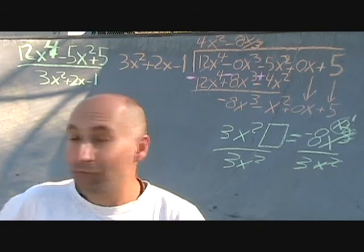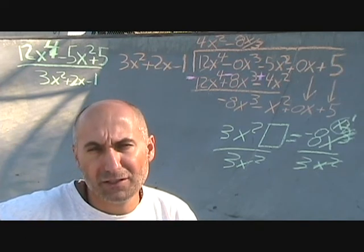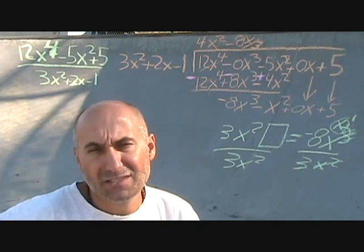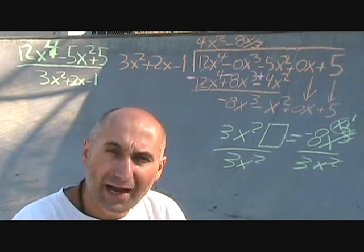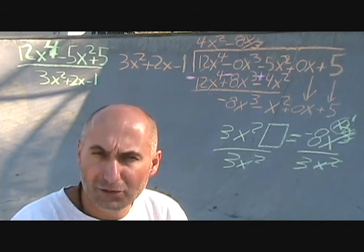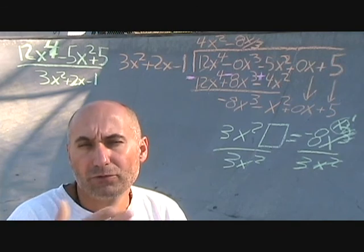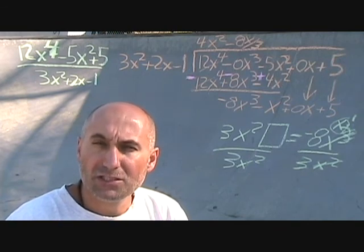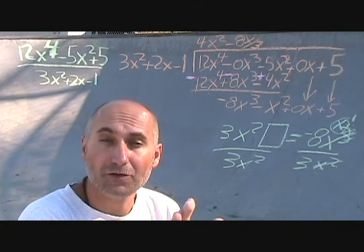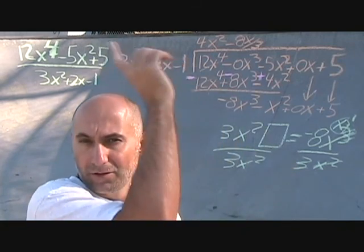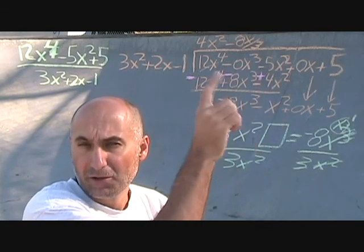Now let's find a bigger space and do a large polynomial long division. We're also going to write out the division statement and look at it graphically — showing what it means graphically when you write out the division statement, which is basically taking one function, multiplying by another, and adding the remainder to give you your original numerator function.